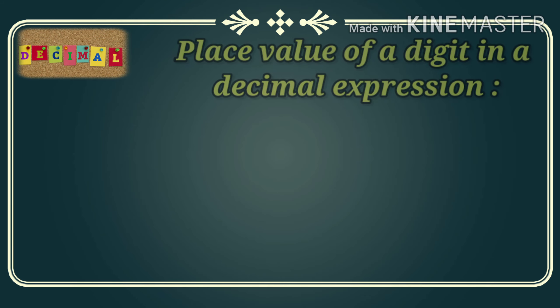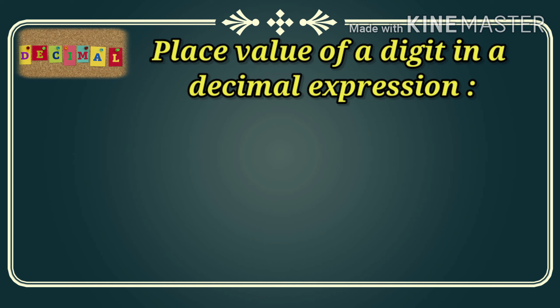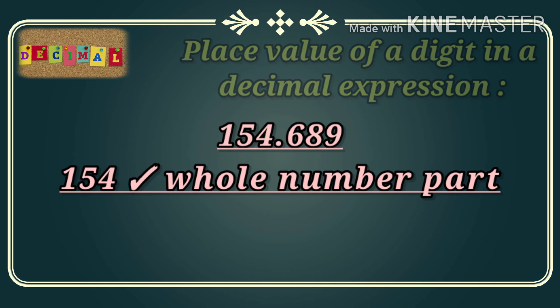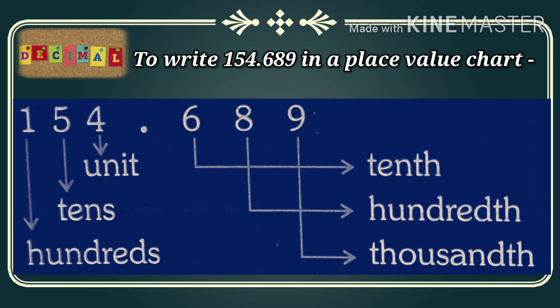Now let's talk about place value of a digit in a decimal expression. We have 154.689. The whole number part is 154, and after the decimal, 689 is the decimal part. To write them in a place value chart: in 154.689, 4 is the units or ones place, 5 represents tens, and 1 represents hundreds. After the decimal, 6 is tenths, 8 is hundredths, and 9 is thousandths.